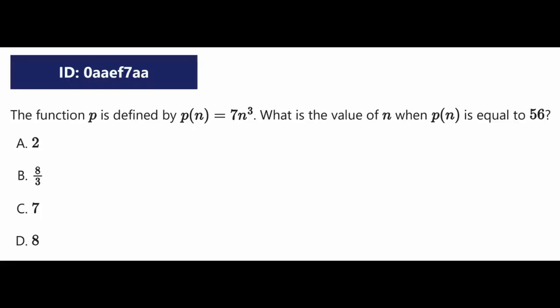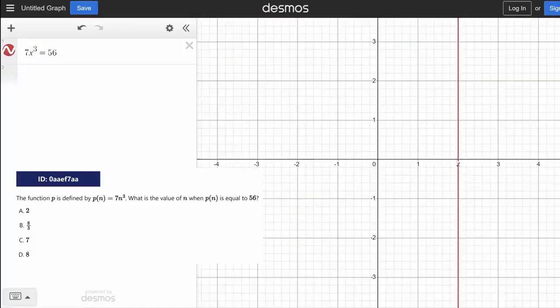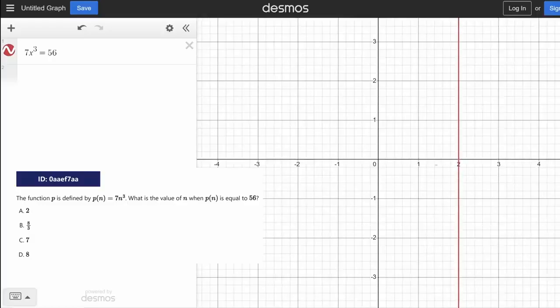Functions are weird. In theory, you shouldn't need Desmos for a problem like this. If you're decent at algebra and arithmetic, you can do the math pretty much in your head. But if you're the kind of person to mess up 56 divided by 7, then Desmos is probably more reliable. You can treat functions like single variable equations. Simply replace n with x, set the function equal to 56, and then you get your value for n as a vertical line.